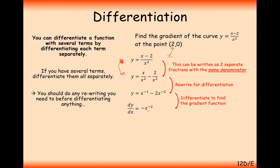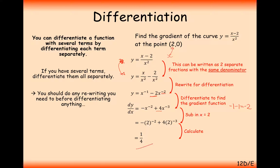So dy/dx equals minus x to the minus 2 plus 4x to the minus 3. Substituting in x equals 2 to work out the gradient at this point, and calculating this, we get one quarter in total.